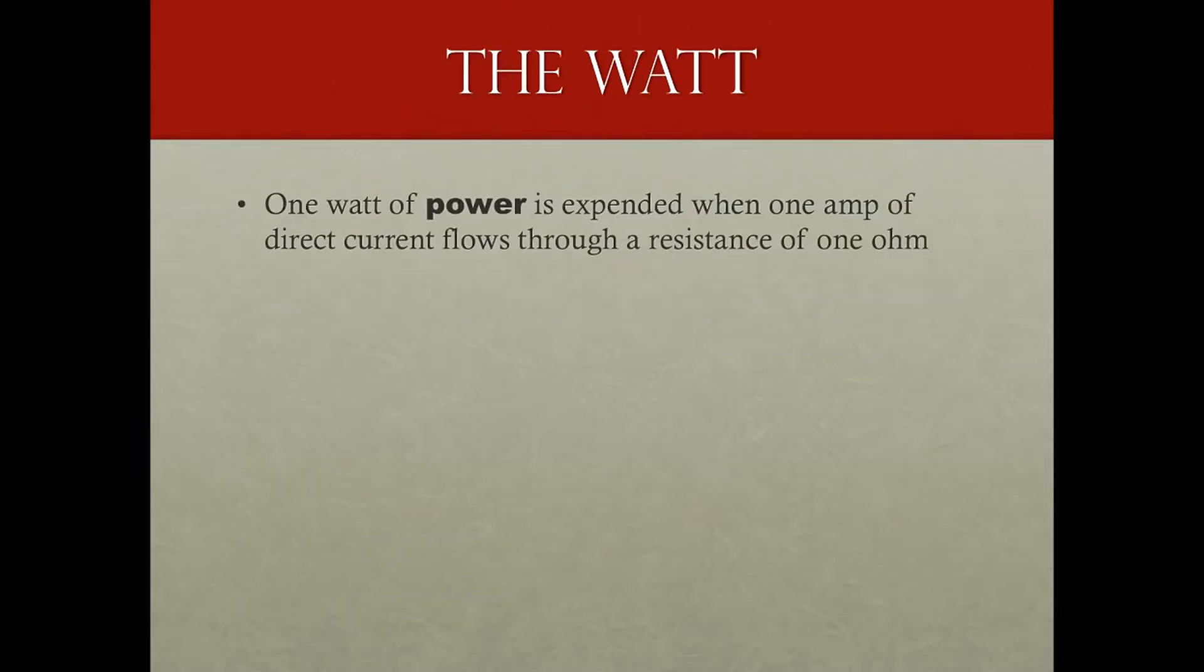The watt, one watt of power is expended when one amp of direct current flows through the resistance of one ohm. So if we look at that in equation form, P equals E times I, where P is the power dissipated in watts. E is the applied voltage in volts. And I is the current flowing in amps.